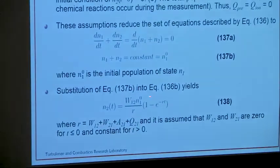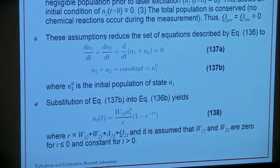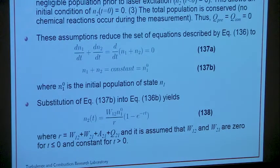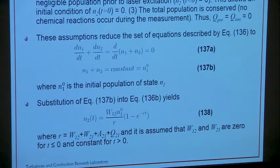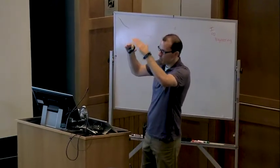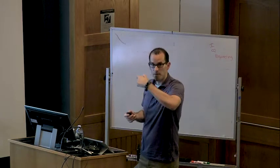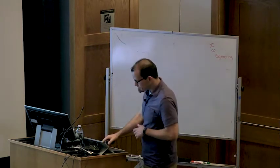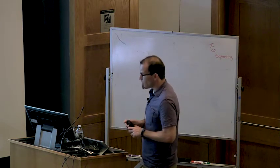If you substitute equation 137b into 136b, you end up with this time-dependent equation. We can see that the upper state is going to build up linearly for times much less than R inverse, where R is just an inverse time since these are rates. Once the upper state population reaches a certain fraction, you also have a loss mechanism. So we build up the upper state linearly, and then after a certain amount of time we lose just as quickly as we build up — we reach steady state. When t is much greater than one over R, we build steady state.